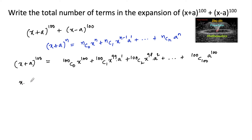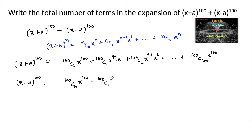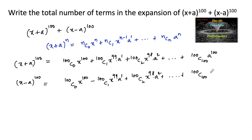Similarly, (x - a)^100: whenever we have (x - a)^n, we get alternating plus and minus signs, so for odd powers we get negative terms. So: 100c0 x^100 - 100c1 x^99 · a^1 + 100c2 x^98 · a^2 - ... + 100c100 a^100.